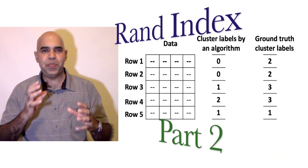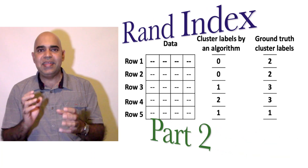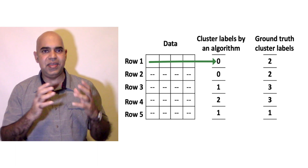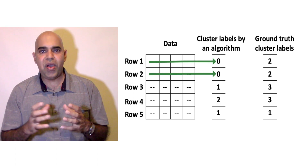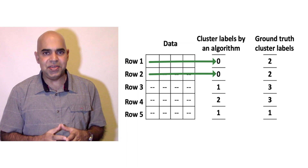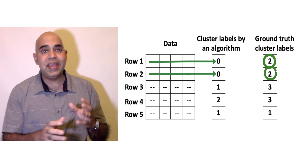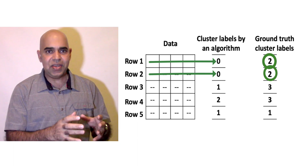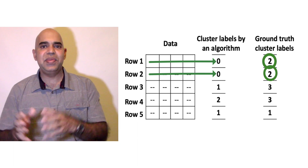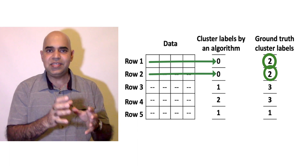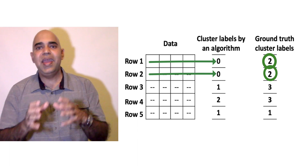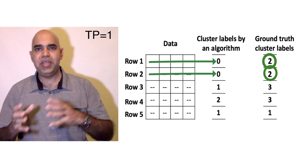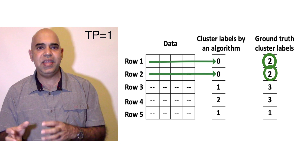Let us pick up our data points systematically. The algorithm says that the first row and the second row belong to the same cluster. The ground truth also agrees that the first row and the second row belong to the same cluster. Therefore, the first and second rows form a true positive sample. Let us keep track of how many true positives we have seen so far.